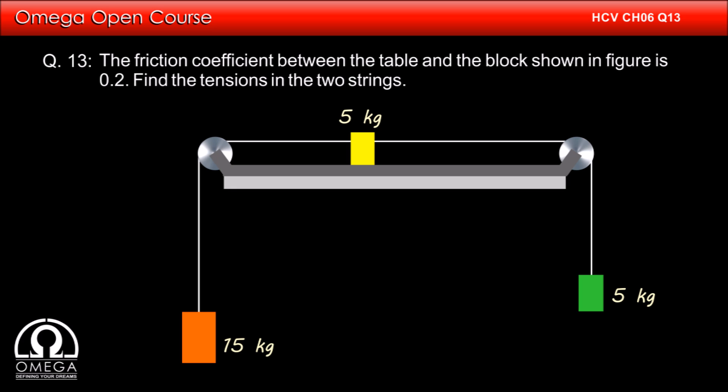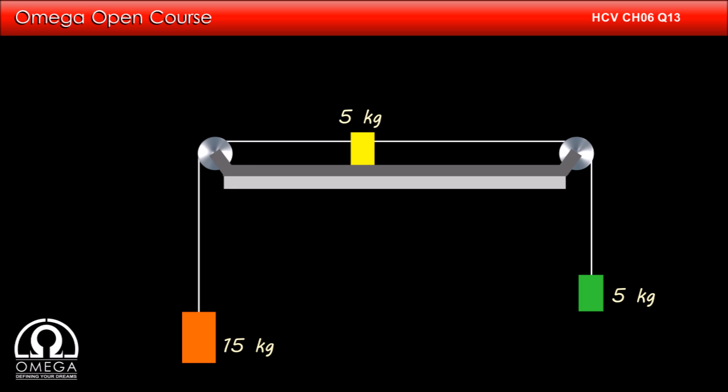The friction coefficient between the table and the block shown in the figure is 0.2. Find the tension in the two strings. Let us assume the tension in the string joining the 15 kg and 5 kg block to be T1, and that in the string joining the two 5 kg blocks be T2. Also, let us assume that all the blocks move with acceleration a in the direction shown.